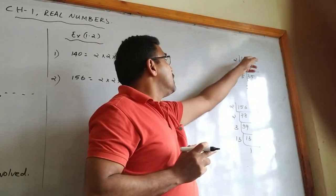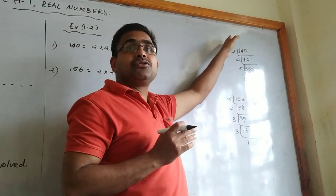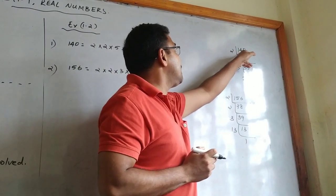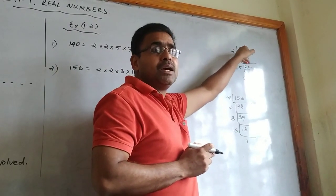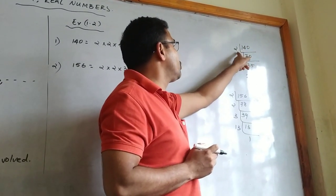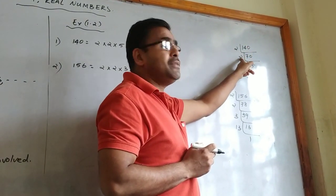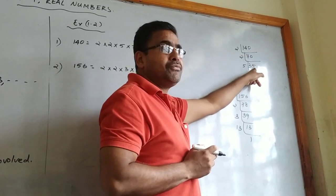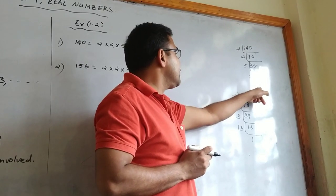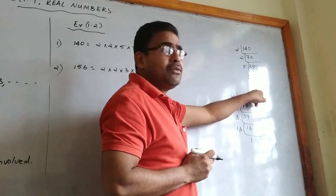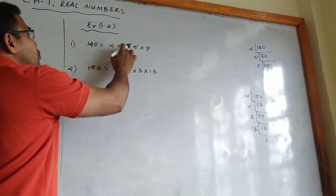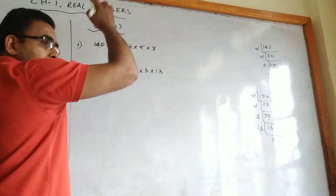We are prime factorizing 140. In class 6 or 7 you studied the divisibility test by prime numbers — we see which prime number we can start with. We can start with 2: dividing 140 by 2 gives 70, dividing 70 by 2 gives 35, dividing 35 by 5 gives 7, and 7 divided by 7 gives 1. So 140 = 2 × 2 × 5 × 7.